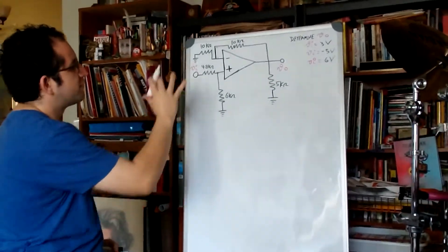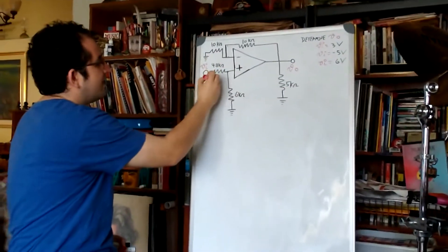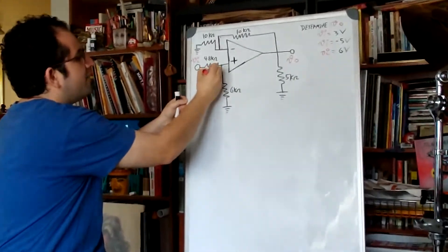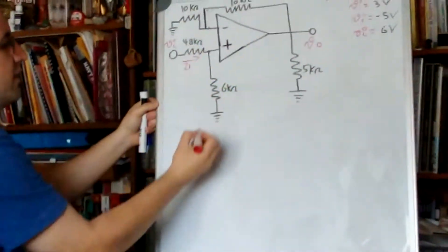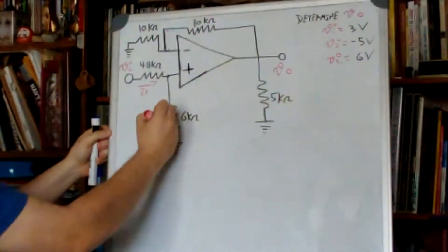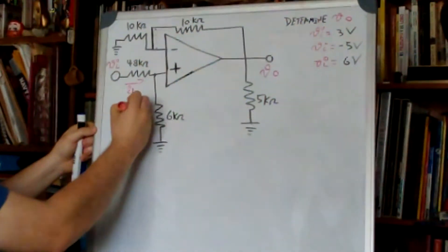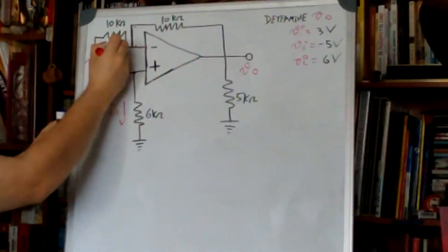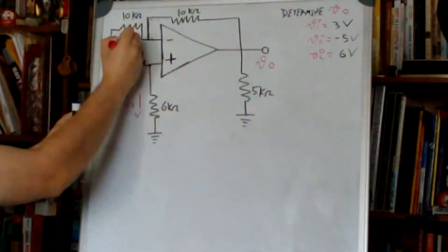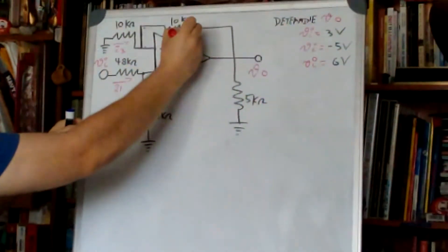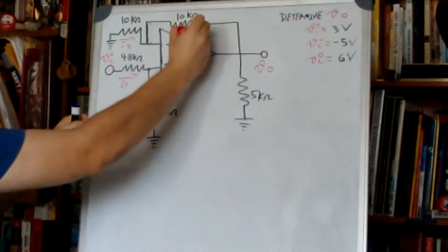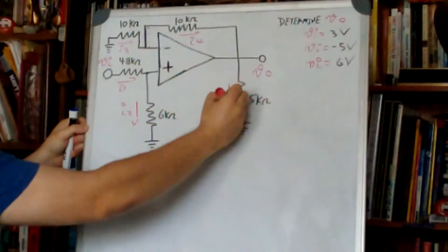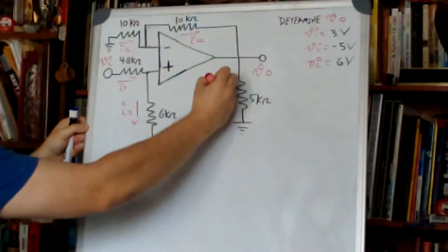Let's first analyze this circuit. I will name this current as i1, this current as i2, this will be i3, this will be i4, and this will be i5.